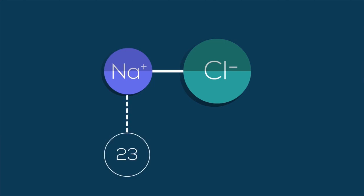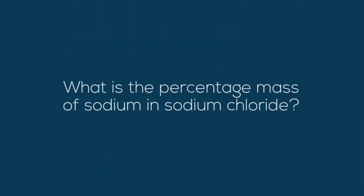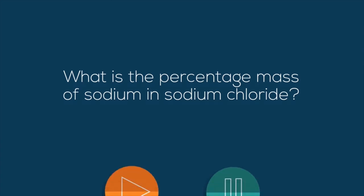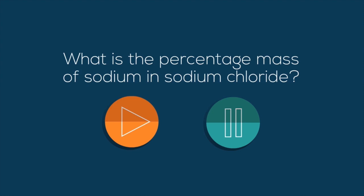Sodium has a molecular mass of 23, and chlorine a molecular mass of 35.5. You already know how to calculate percentage mass, so let's see if you can figure out the percentage mass of sodium in sodium chloride. Pause the video and resume when you've worked it out.